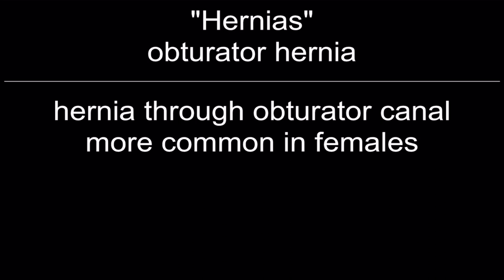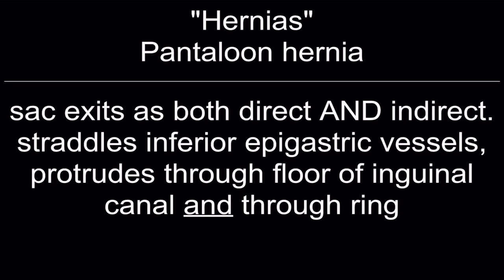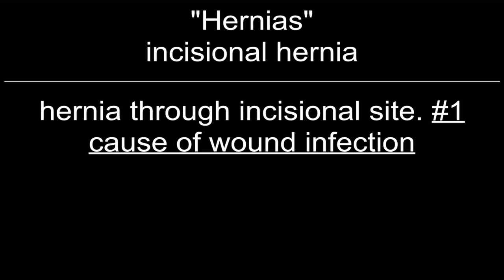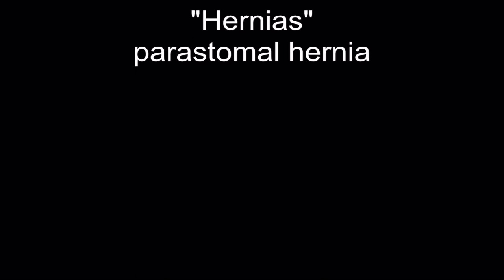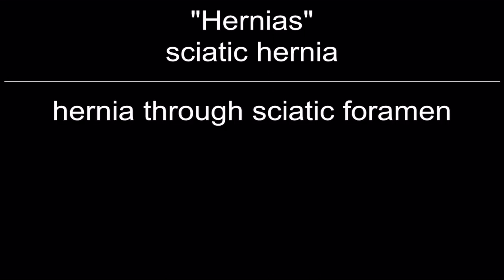Pantaloon hernia: sac exists as both direct and indirect, straddles the inferior epigastric vessels, protrudes through the floor of the inguinal canal and through the ring. Incisional hernia: through incisional site — number one cause is wound infection. Ventral hernia: incisional hernia with ventral abdominal wall. Peristomal hernia: hernia adjacent to an ostomy. Sciatic hernia: through the sciatic foramen. Richter's hernia: incarcerated or strangulated hernia involving only one side of the bowel wall — may spontaneously reduce, leading to necrosis and perforation without obstruction.